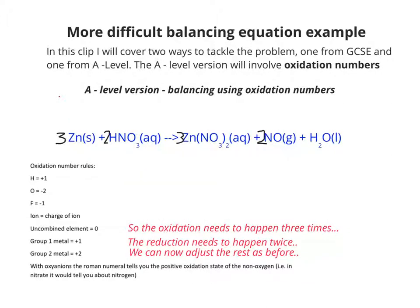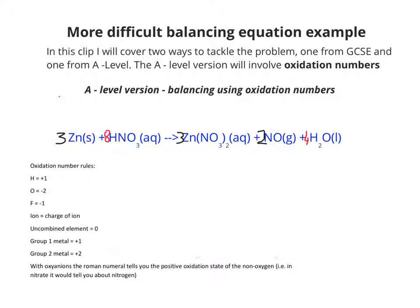And if we now think about the nitrogen on the left-hand side and on the right-hand side, we'll quickly realize there's eight nitrogens on the right-hand side. So therefore, we need to multiply up the HNO3 on the left-hand side by eight, which then allows us to put 4H2O in and adjusting the rest as before, that gives us our fully balanced equation.